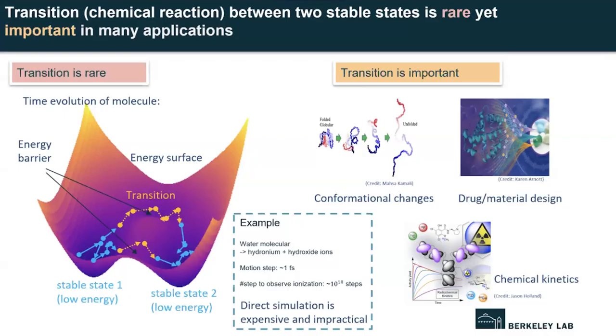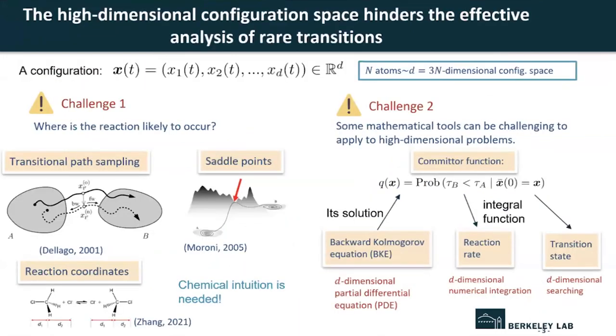Despite the infeasibility of the direct simulation, studying rare chemical reactions gives great insights in many fields, such as studying conformational changes, designing new drugs and materials, and calculating chemical kinetics. Instead of using direct molecular dynamics simulation, researchers have developed other tools to study rare transitions.